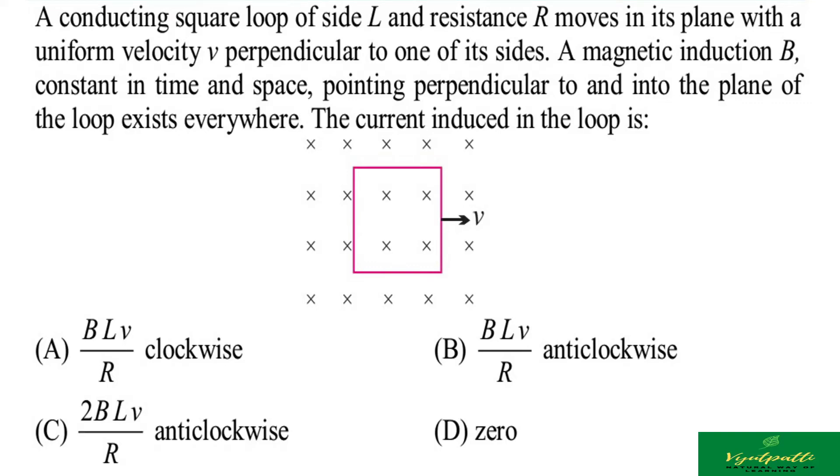A conducting square loop of side length L and resistance R moves in its plane with a uniform velocity v perpendicular to one of its sides. A magnetic induction B, constant in time and space, pointing perpendicular to and into the plane of the loop, exists everywhere. The current induced in the loop is: